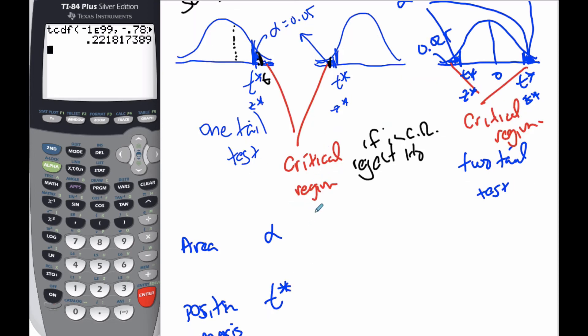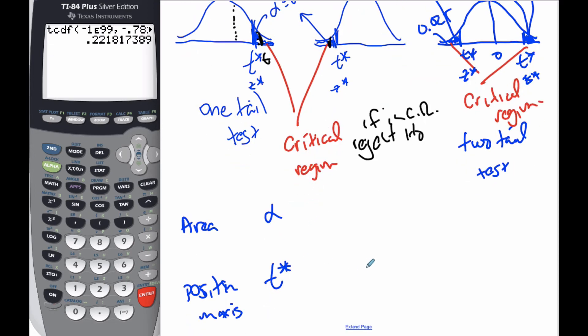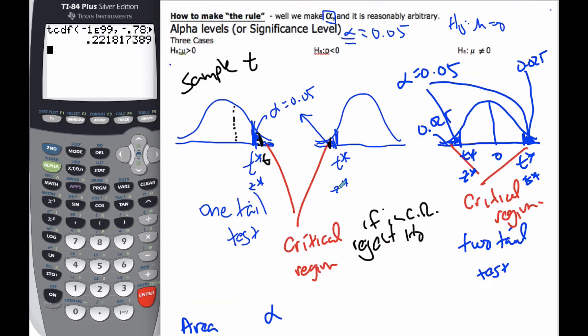Similarly here, we compare t to t-star. If t is inside the critical region, we reject. And so we compare t-star to t, we compare these two. And we either reject or fail to reject based upon that, and it is a position on the x-axis. Now I say t, but know that it could also be z-star with z. These are interchangeable dependent upon which curve you're using, the t or the z.